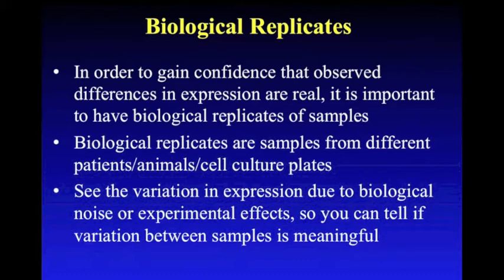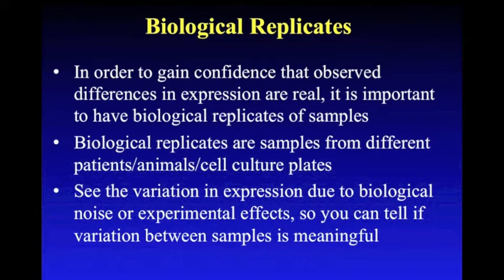One important aspect of experimental design in all of these types of experiments is the inclusion of biological replicates. We want to be confident that the genes we identify are really differentially expressed. Biological replicates are samples from different patients, animals, or cell culture plates. They help show the normal variation between samples of the same type, either due to biological noise or experimental differences, allowing you to see if the difference between sample types is greater than the normal variance between replicates.